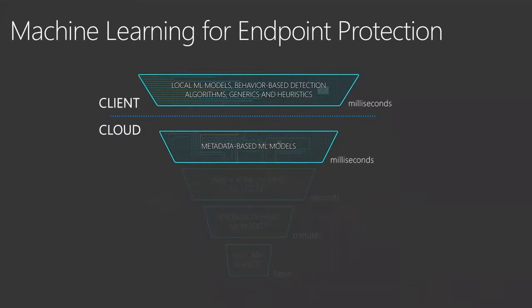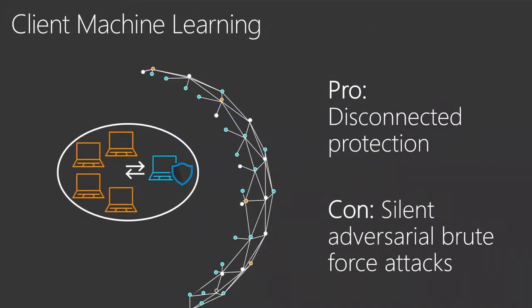Today we're going to be focusing on the top two layers — primarily the metadata-based models for adversarial attacks. There are important pros and cons when it comes to client versus cloud. If you put all your protection capabilities in the client, the attacker can take your client, test it forever, and try to get all the answers. They can understand what you detect as malicious versus clean, and even figure out how you do that. Once attackers have this knowledge, they can create new samples and attack users without you ever knowing.